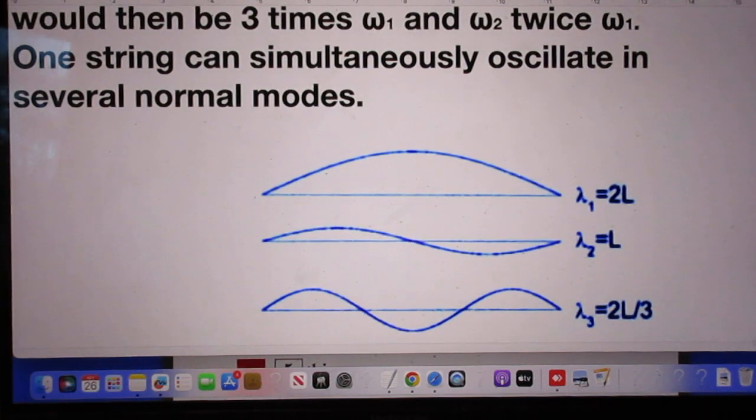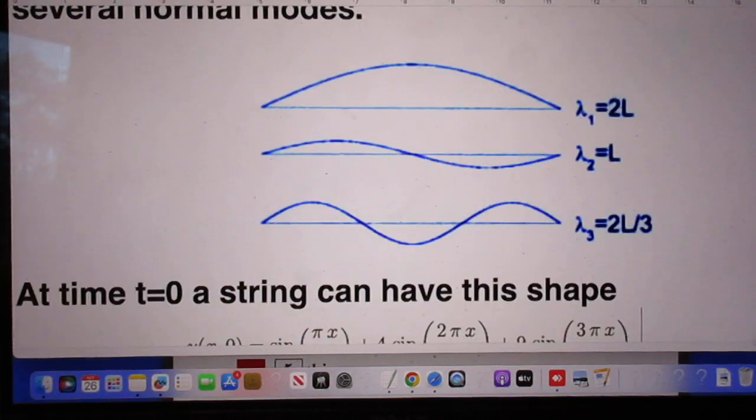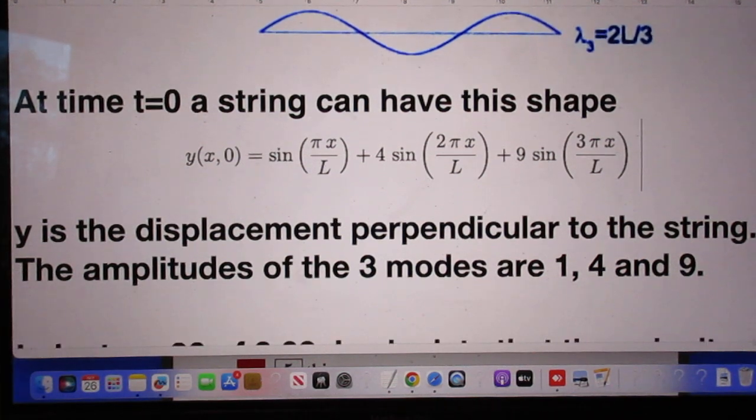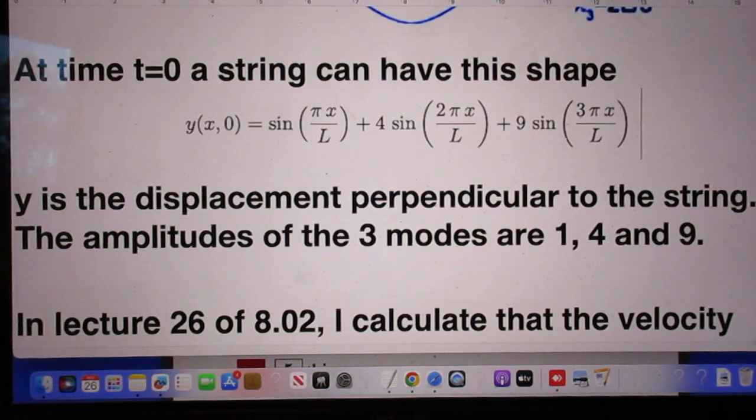One string can simultaneously oscillate in several normal modes. At time t equals 0, a string can have this shape. Y is the displacement perpendicular to the string and the amplitudes here are 1 for this mode, 4 for this mode and 9 for this mode.